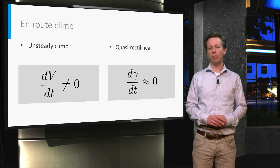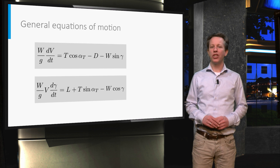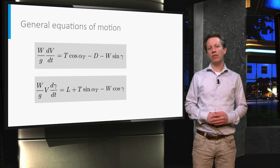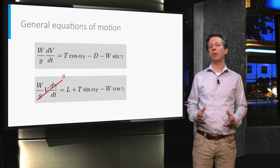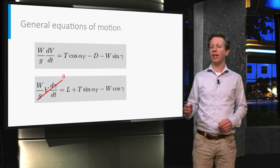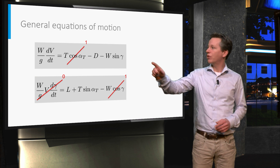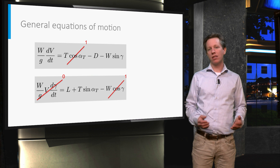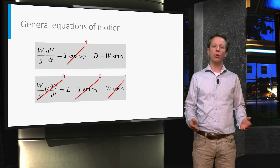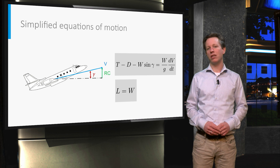In order to calculate the climb performance, we need the equations of motion for this specific condition. Let us start with the general equations of motion for symmetric flight. By setting the change of flight path angle equal to zero, these equations simplify. For normal operations, we can also make the small angle approximation and assume that the thrust angle of attack is aligned with the airspeed vector. Hence the two cosine terms become one and the sine of the thrust angle of attack as well. This results in a simplified set of equations: one equation containing the climb angle as a variable, and a second equation stating that lift must equal weight.